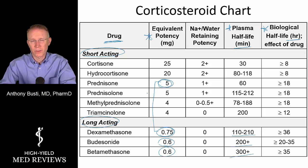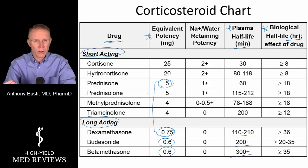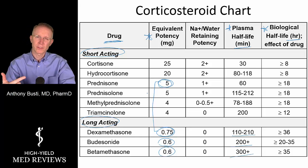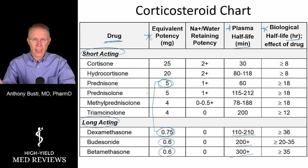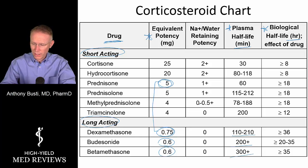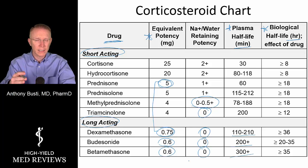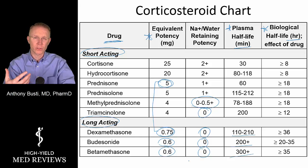The last differentiating factor is mineralocorticoid activity — the ability of the steroid to cause sodium and water reabsorption and excrete potassium. The more mineralocorticoid activity it has, the more sodium and water retention occurs, raising plasma volume, which can raise blood pressure, exacerbate heart failure, cause edema, and even cause weight gain from fluid accumulation. Drugs with very little mineralocorticoid activity include methylprednisolone, triamcinolone, dexamethasone, budesonide, and betamethasone — so some of the longest-acting agents also have the least mineralocorticoid activity.